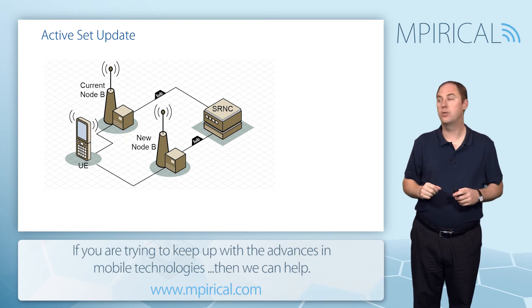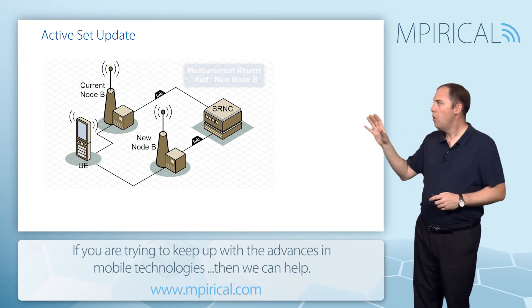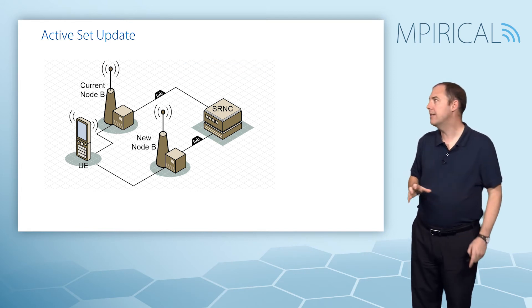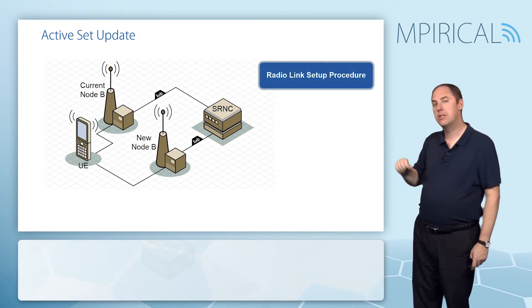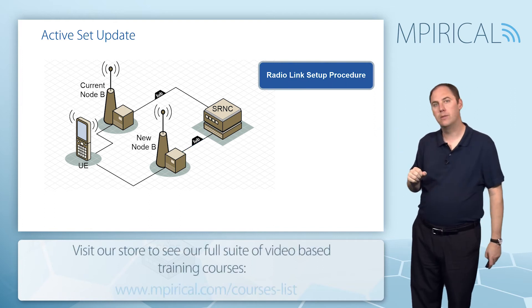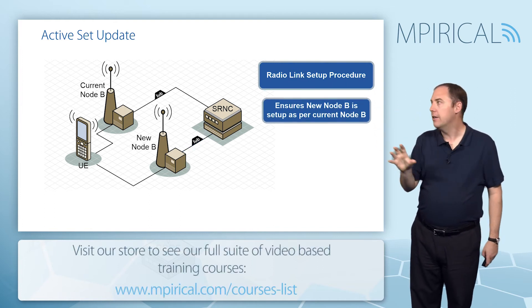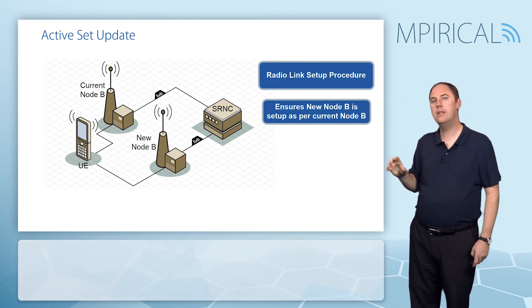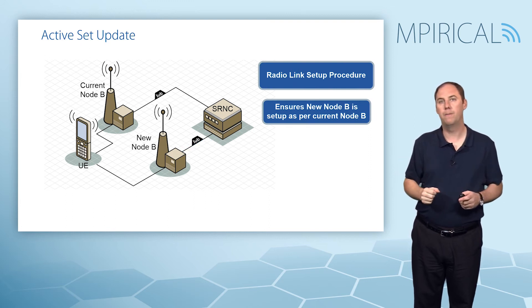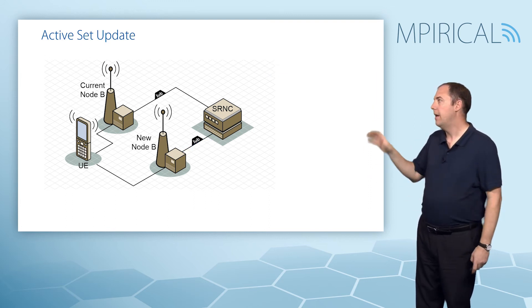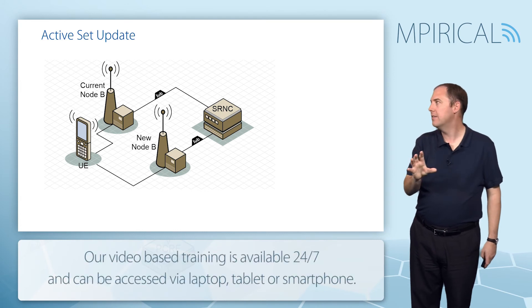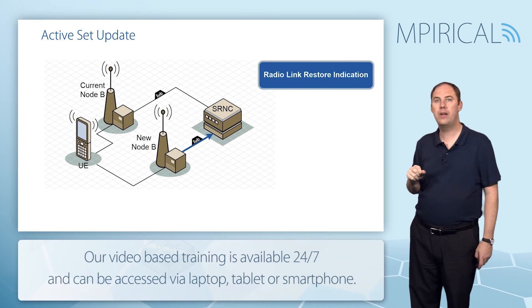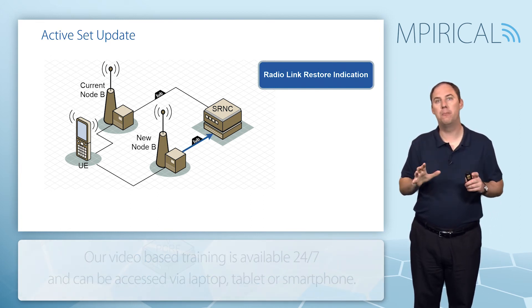Let's look at the soft handover procedure. The mobile triggers it by sending a measurement report up to the RNC. When the RNC receives that, it will configure the new cell with a radio link setup procedure. This will be configured to look like the existing cell — the only major difference typically being the codes it's placed on. The new cell can then be configured to look for the handset, and a radio link restore indication goes up to the RNC saying it has locked on to the uplink.